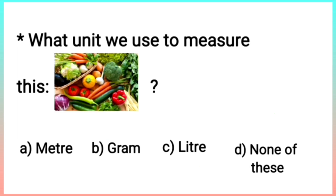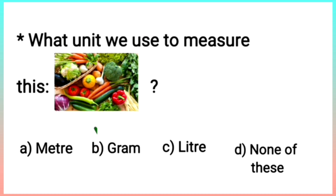The next question is: what unit do we use to measure the vegetables? Here is a picture of a vegetable. Option A is meter, and we know that meter is used to measure length, so that option is incorrect. Option B is gram. To measure the weight of something, we use grams. That's why option B is correct.